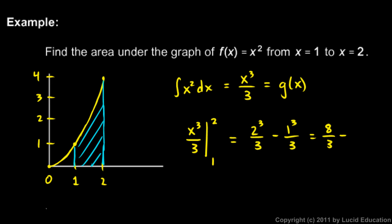And so that's 8/3 minus 1/3, which equals 7/3. And that's our answer. That is the area under the curve between x equals 1 and x equals 2. That's exactly correct, not an approximation - that is in fact the exact value.